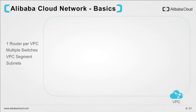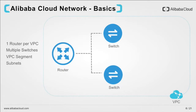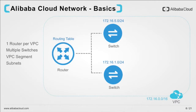When you launch a VPC-based service in Alibaba Cloud with the default VPC, you get a router and a switch. Note that you can have only one router in any VPC. However, you can have multiple switches. Each switch represents a particular subnet within the VPC. So in the example shown, the network block selected for our VPC was 172.16.0.0/16. This block can be further subdivided into subnets. In our example, we have two switches each representing a different subnet: 172.16.5.0/24 and 172.16.1.0/24, both within the /16 block provided by the VPC.